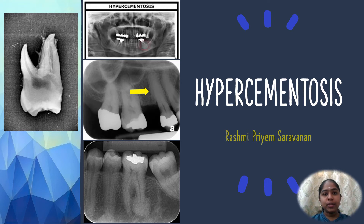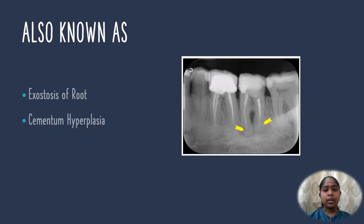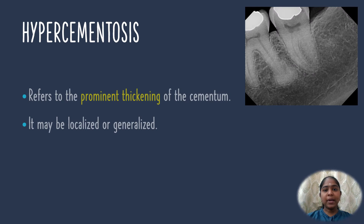Hello and welcome to today's topic: hypercementosis. Hypercementosis is also known as exhaustosis of root or cementum hyperplasia. It refers to the prominent thickening of the cementum, and may be localized or generalized.